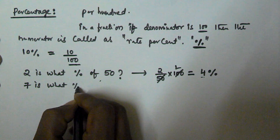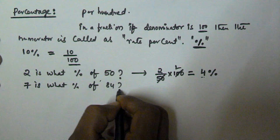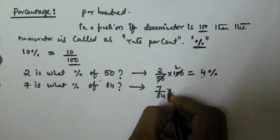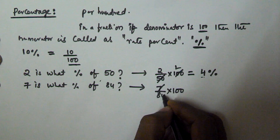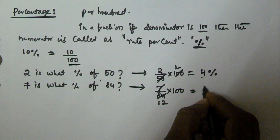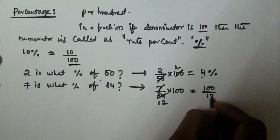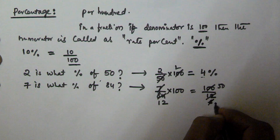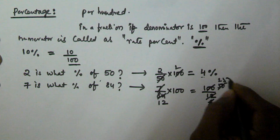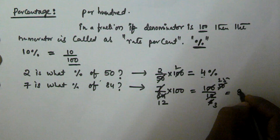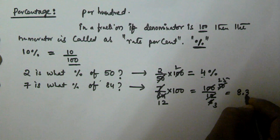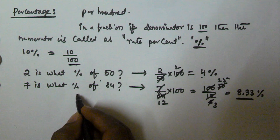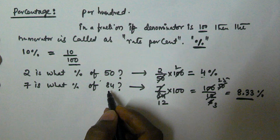Let's see another example: 7 is what percentage of 50? Calculating 7 divided by 50 multiplied by 100, this is equivalent to 7 is 8.33% of 84.